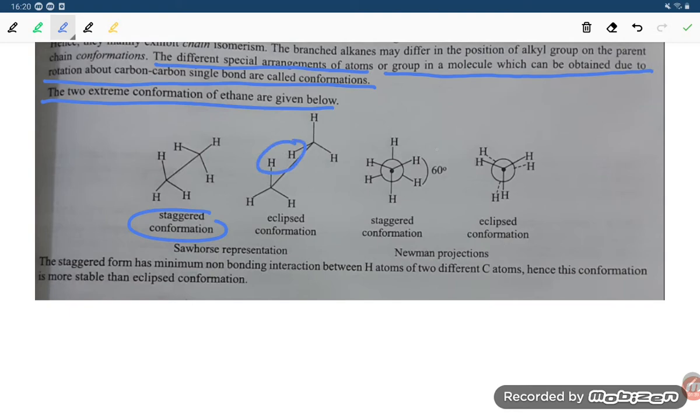Here you can see staggered conformation is 60 degree angle but eclipsed conformation you can see that is zero degree. And if the carbon-carbon single bond is represented by tilted line, that is what is known as the sawhorse representation. And if the front carbon is represented by dot and the back carbon is represented by circle, that kind of the representation is known as Newman projection.